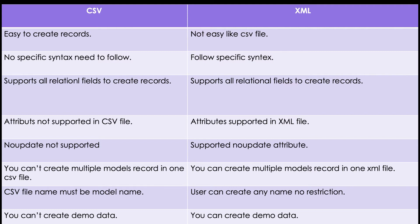You can check the playlist where each point is covered with real test cases: how to create a CSV file, how to create records with relational fields like one-to-many, many-to-many, or many-to-one in CSV. On the XML side, everything that CSV supports is also supported, plus you can create records for multiple models in one file, call Python methods using XML, and delete single or multiple records.